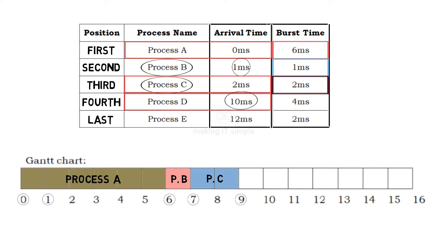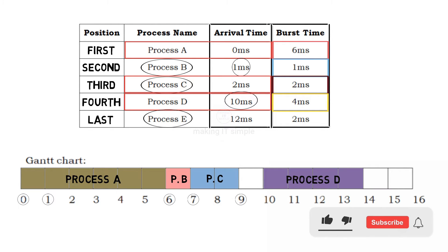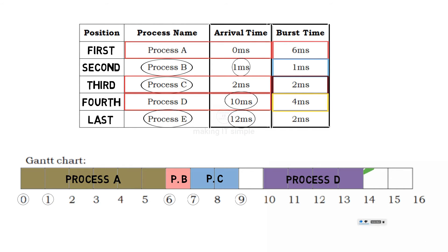At 10ms, process D arrives and gets CPU execution for 4 milliseconds, completing at 14ms. The last process, process E, arrived at 12ms and executes from 14ms for 2 milliseconds, finishing at 16ms. At 16ms, each process has completed its execution. In simple terms, this is how FCFS works.